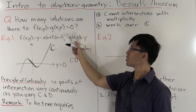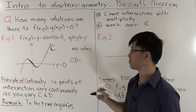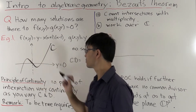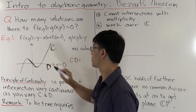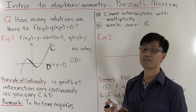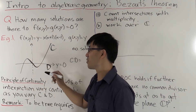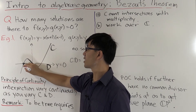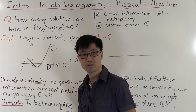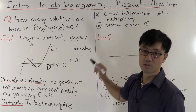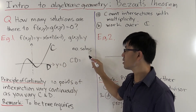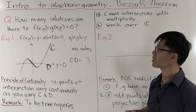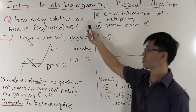The other polynomial we'll set equal to Y. Y equals 0 just gives you the X axis — let's call that D. In this case, it's quite easy to see the number of solutions: there are three points of intersection of these two curves. So the number of solutions, often denoted C·D, is just 3.